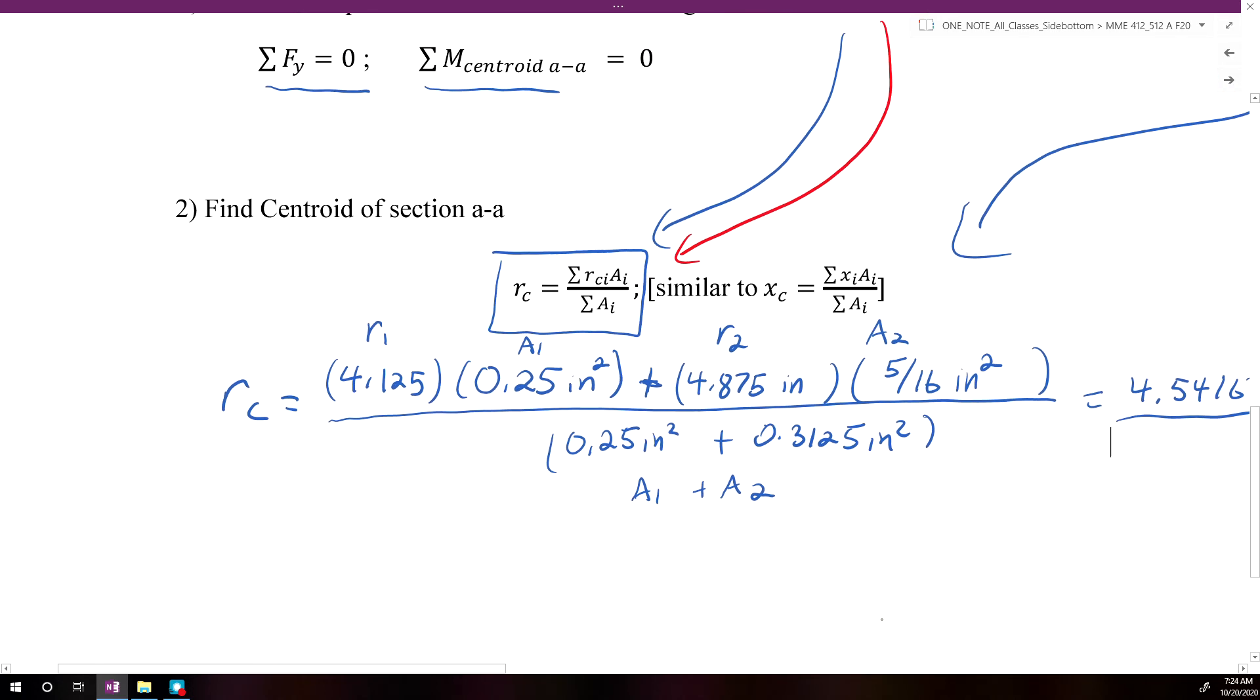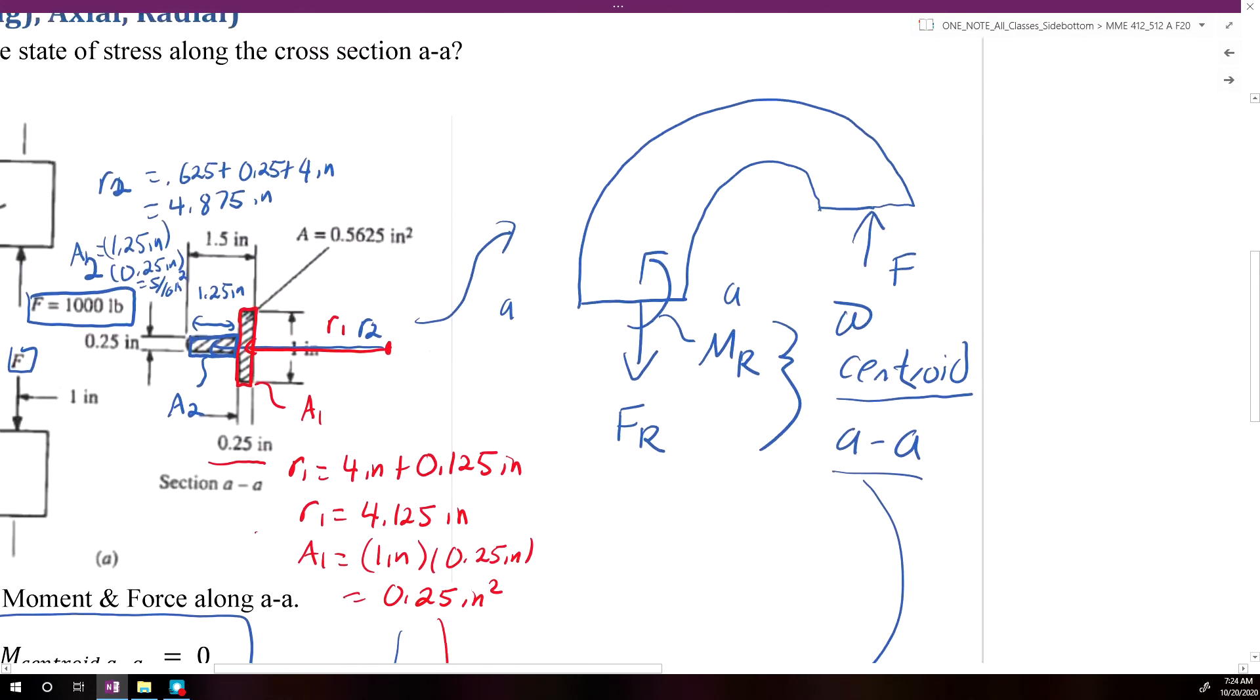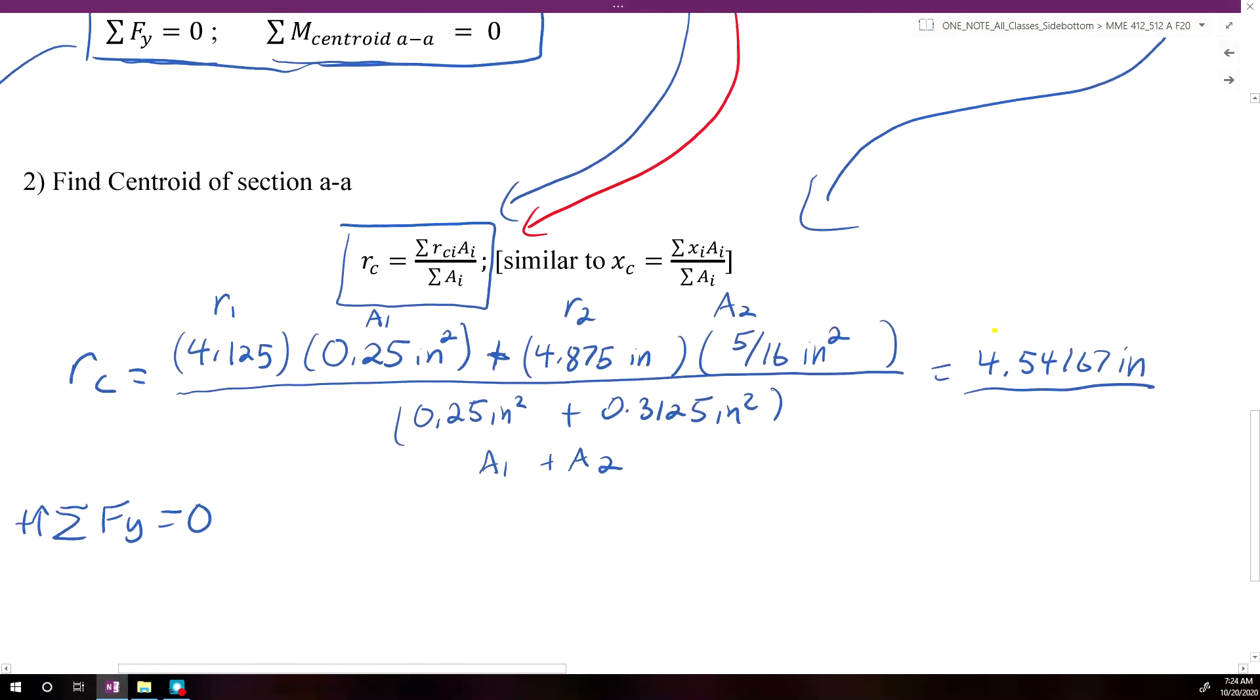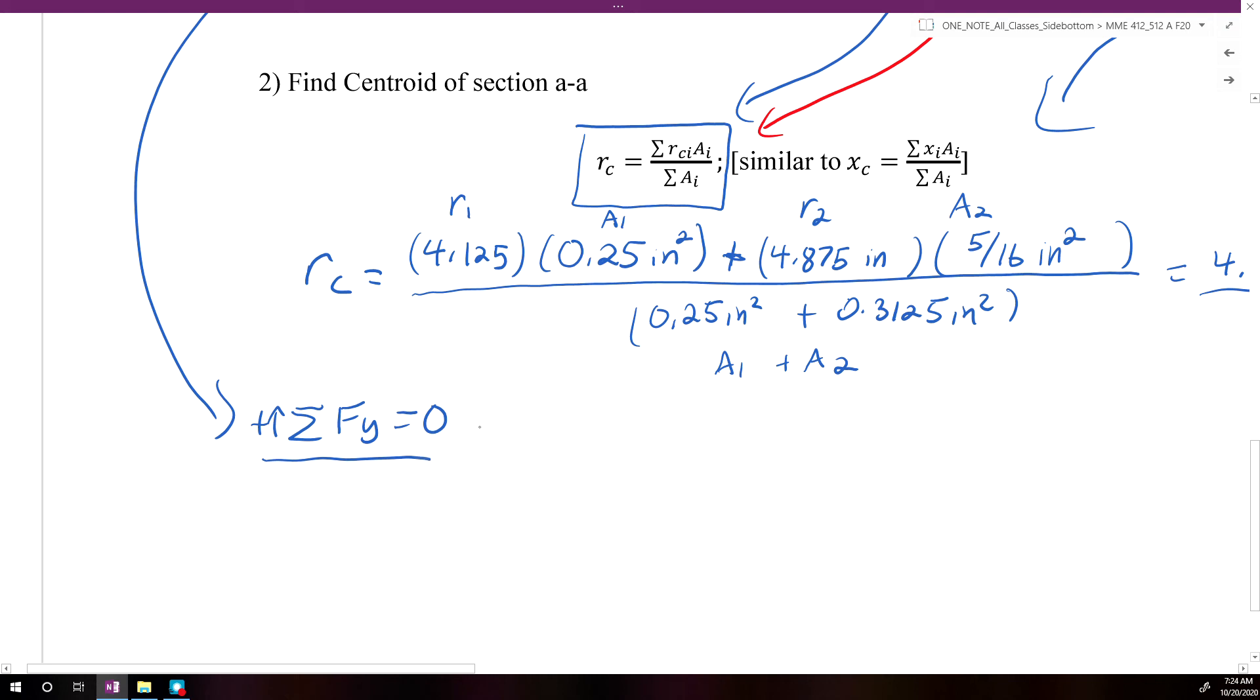Alright, so then the last thing we have to do is we just need to evaluate these two equations here. So if we start off with ΣFy and we set it equal to 0, so again we're just looking at this free body diagram that we drew at the top here to evaluate these two equations. So the first one is just sum of all the forces in the y direction are equal to 0, so there's only two forces on that free body diagram. There's our applied force F and our reaction force FR. So FR would just be equal to F, and F was an applied force of 1,000 pounds.